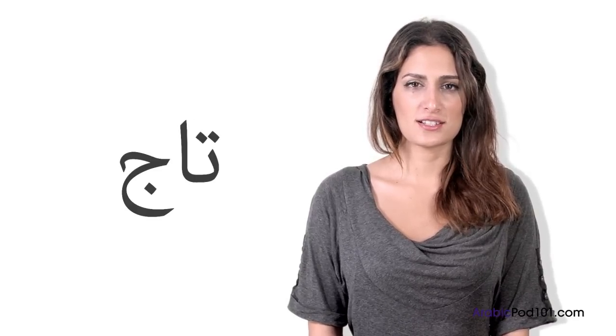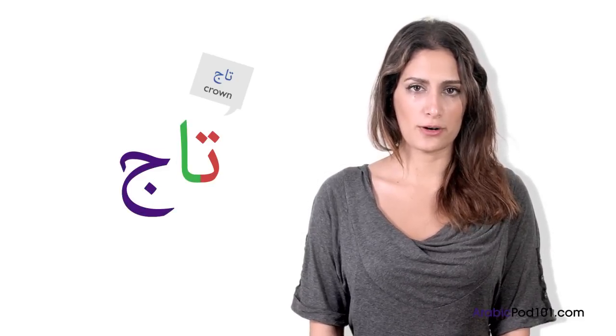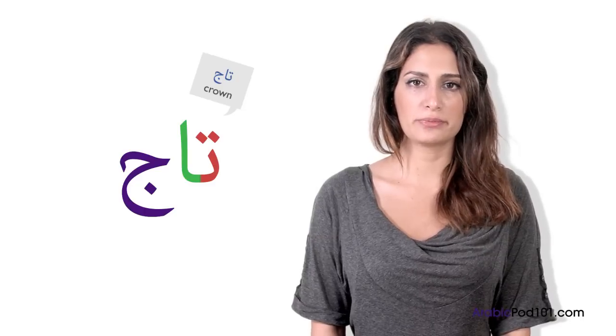Let's learn a word using some of these letters. Taj. Repeat after me. Taj. Taj means crown. That's Ta in the initial form, Alif in the final form, and Jim in the isolated form. Disconnected from the Alif before it, because as we learned in the first lesson, the Alif connects differently.